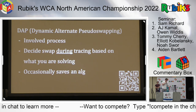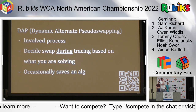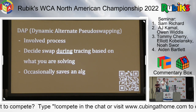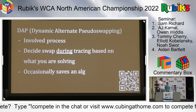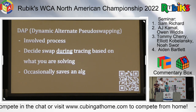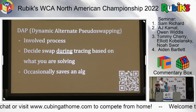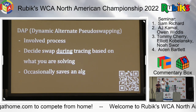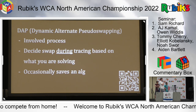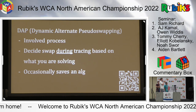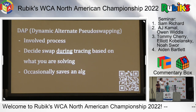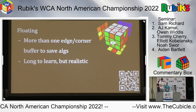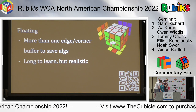We can take this one step further using something called dynamic alternate pseudoswapping. It's quite an involved process I haven't started documenting yet, but essentially: instead of deciding on the swap before you trace edges, you decide on the swap during tracing based on what you're solving. This occasionally saves an algorithm over normal alternate pseudoswapping. I'll now pass it over to Noah who will talk about floating.